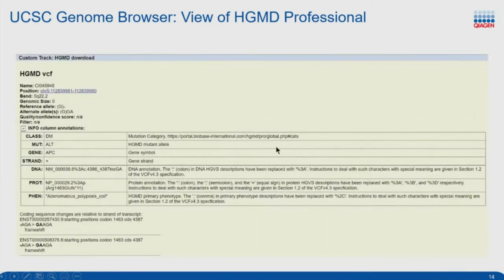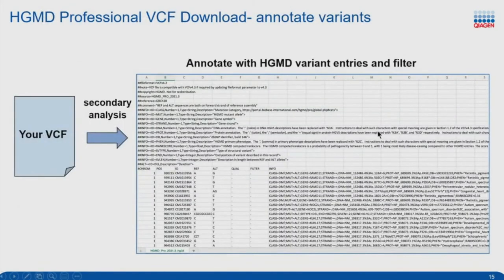Many users, when they download the HGMD VCF file, will use it during their secondary analysis — referencing the VCF from HGMD to annotate their variants. Let's say you did sequencing and generated a large list of variants, and you want to narrow down to those most likely to be clinically significant. One thing you can do is filter by allele frequency or quality metrics. With the HGMD VCF download, you can also annotate with HGMD and use those annotations to filter down to a smaller list of variants to examine in more detail.